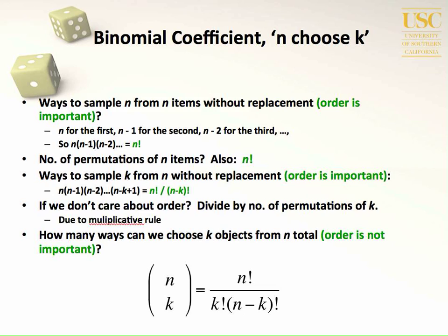Fisher's Exact Test is computationally intensive if there are large numbers of individuals in the sample, and that's historically why Pearson's chi-square test has been used widely. But if you want to understand how Fisher's Exact Test functions, you need to understand the expression n choose k.